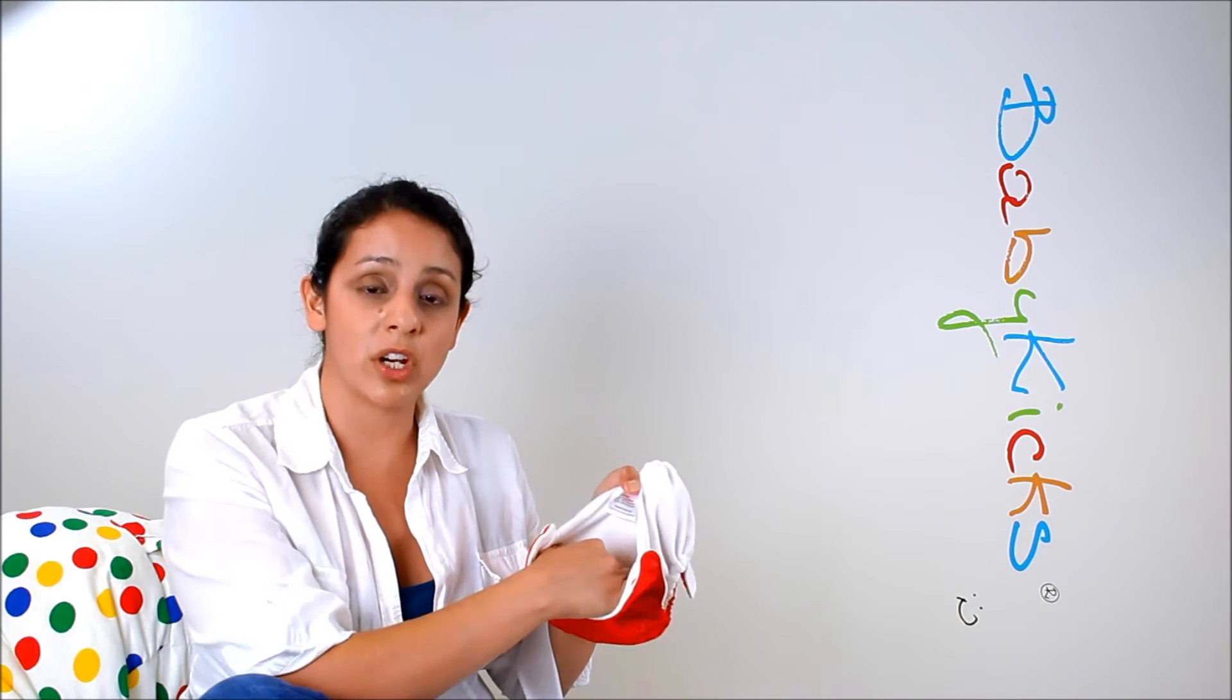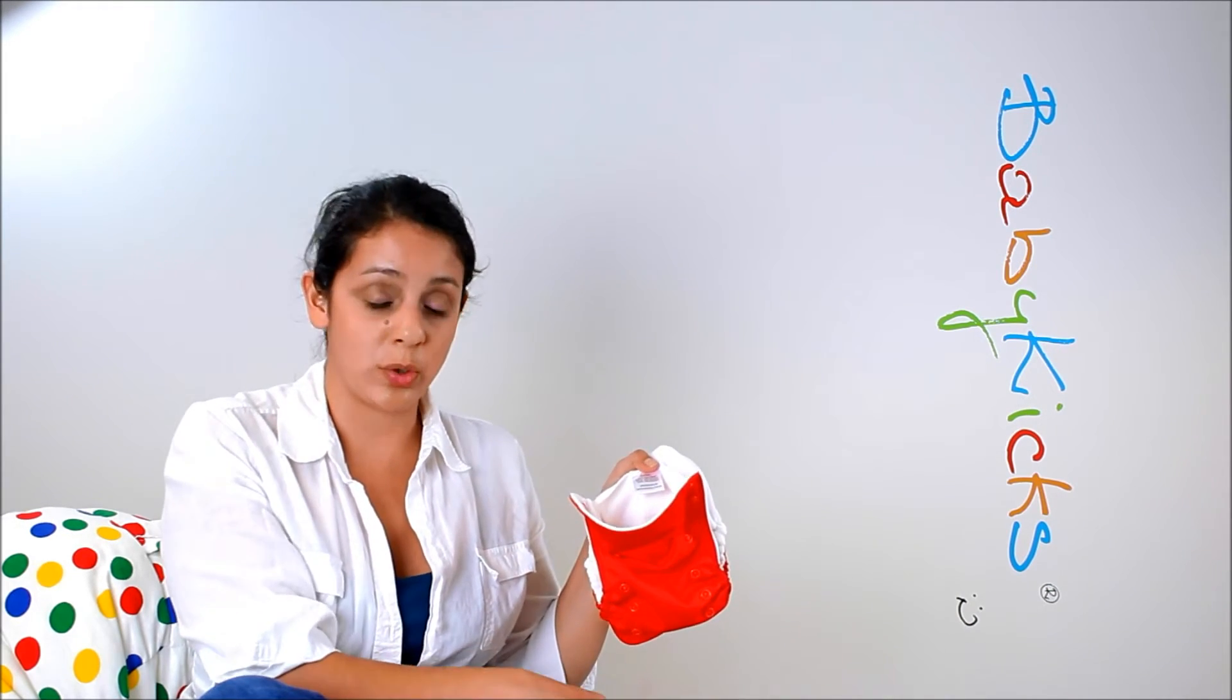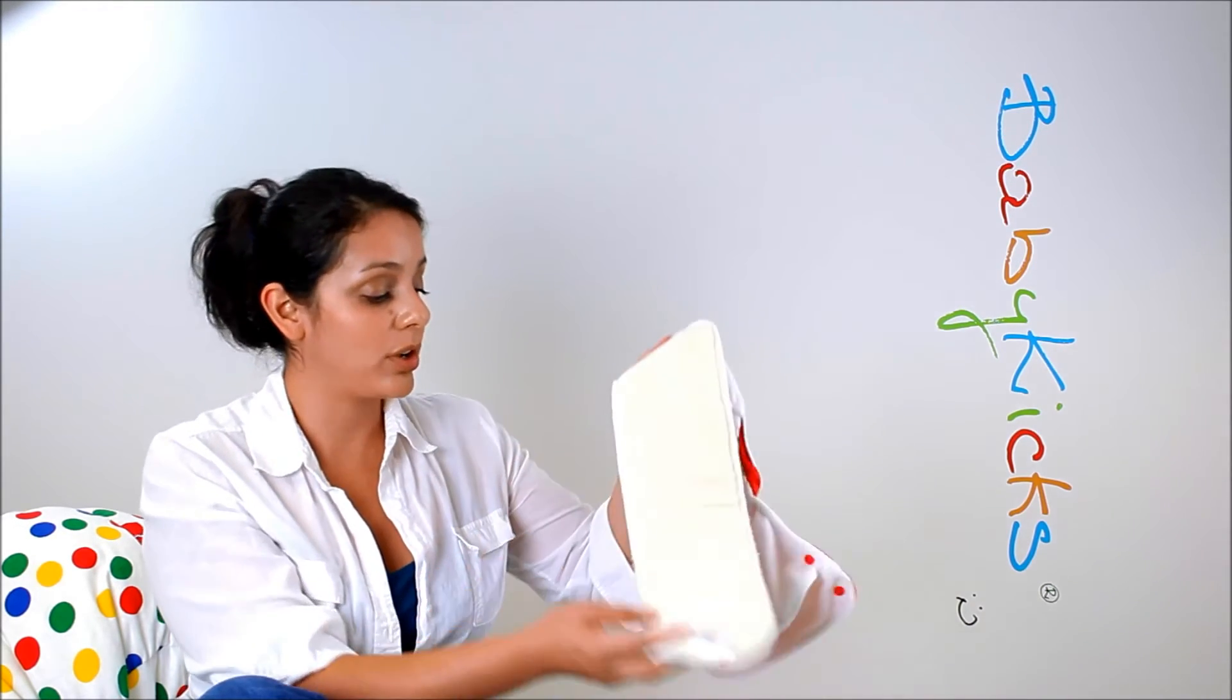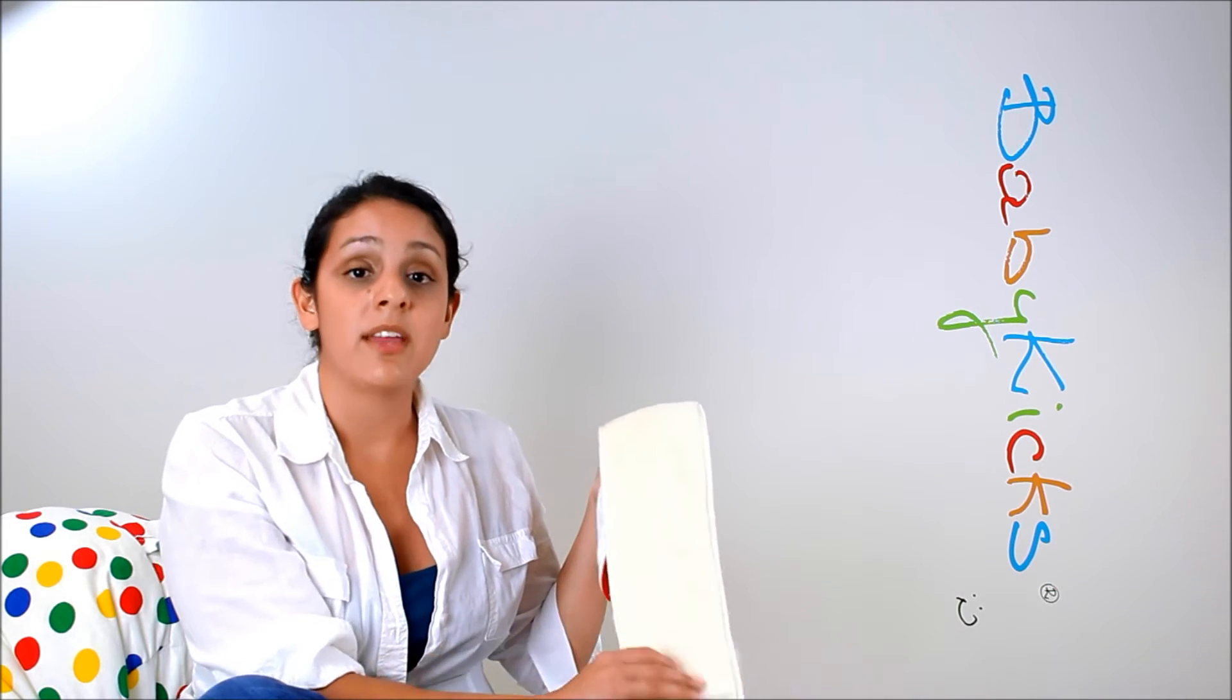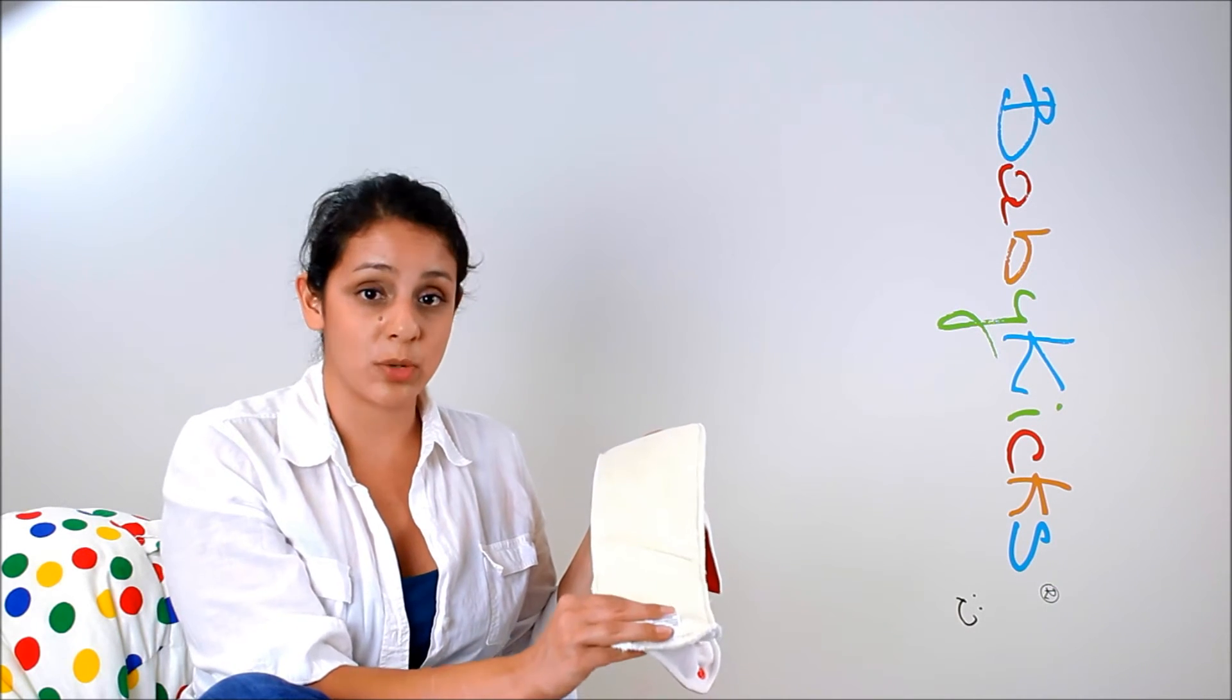The front stuffing pocket is very large and easy to get the insert into. Or you can simply go natural and lay the insert on top, hemp side up. The natural hemp is soft and gentle against your baby's skin.